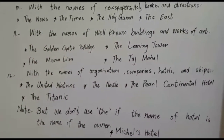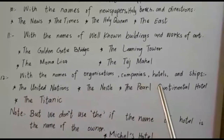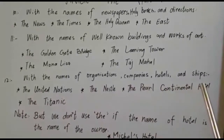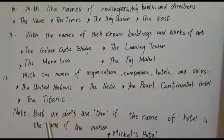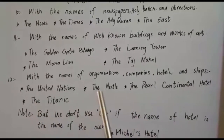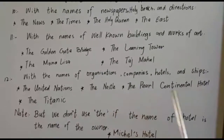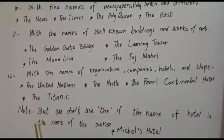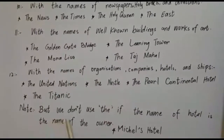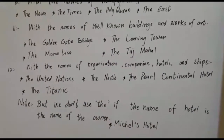Rule number 12: 'the' is used with the names of organizations, companies, hotels, and ships. For example: the United Nations, the Nestlé Company, the Pearl Continental Hotel, the Titanic. However, we don't use 'the' if the name of the hotel is the name of the owner.